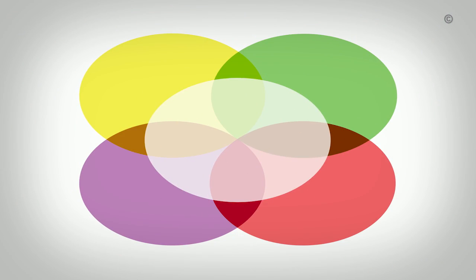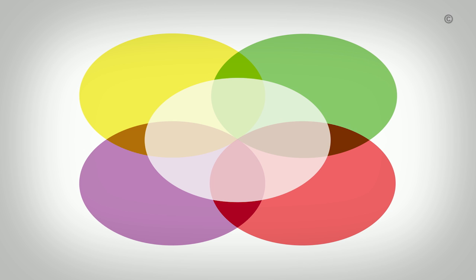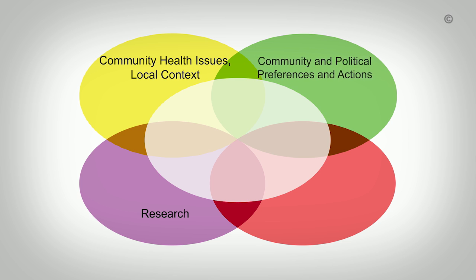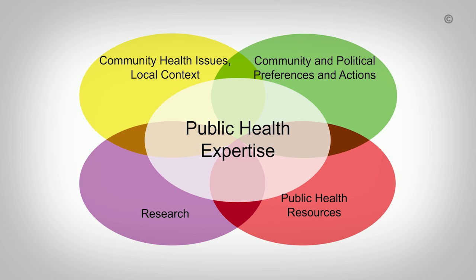This model, which is depicted as five overlapping ovals, is my favourite because it illustrates not only that many different kinds of evidence are used to inform public health decisions, but also just how complex public health decision-making is. The four overlapping ovals in the background represent unique sources of evidence including research evidence, community health issues and the local context, community and political preferences, and public health resources. The oval in the foreground represents the public health expertise needed to integrate all relevant evidence from each of the four sources during the decision-making process.